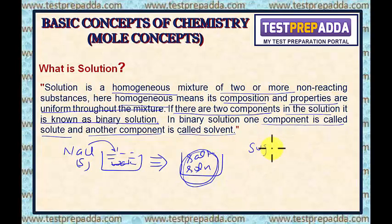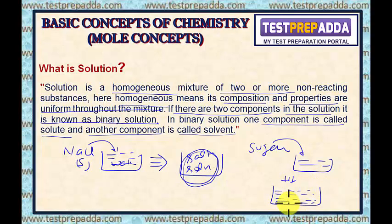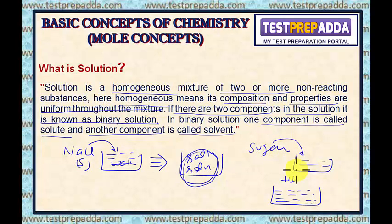If I put sugar in water, here also you are going to get a single phase. Throughout the solution, the composition of sugar will be the same. In the first example, NaCl is mixed with water; in this example, sugar is mixed with water. So both these are examples of binary solution.